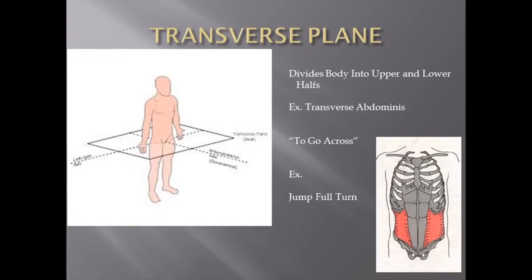The transverse plane cuts you like a hula hoop into upper and lower halves. Upper is superior, lower is inferior. Any twisting movement that goes along this plane follows the glass. If you place your hands flat on that plane and move around it, you can see you're spinning — that is your transverse plane. Any double full, quadruple full, whatever — it doesn't matter what direction you're twisting as long as you're twisting.